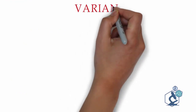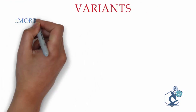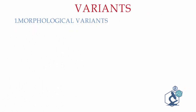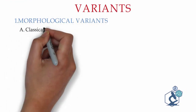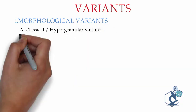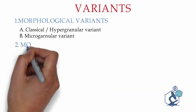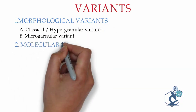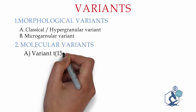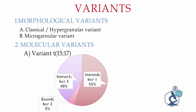A quick overview of variants in APML: there are morphological variants such as classical hypergranular and hypogranular forms. Molecular variants include variants of the translocation at chromosome 17. Breakpoint cluster 1 at intron 6 is the most common variant, followed by breakpoint cluster 3 at intron 3.